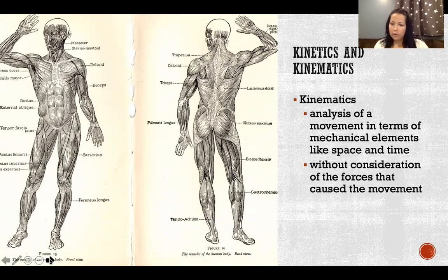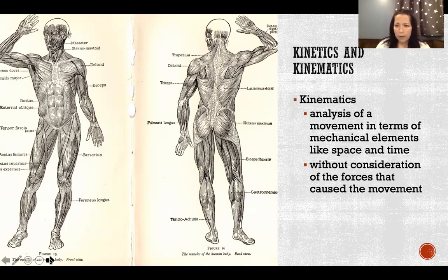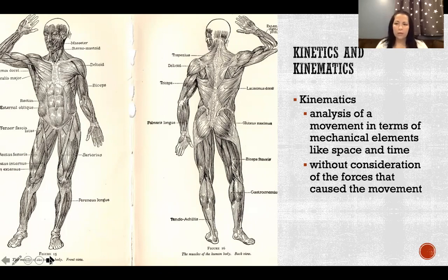Kinematics is without consideration of the forces that cause the movement. So in kinematics, we don't care about how much muscle force we produce to move the limb or how much gravity was working against us. We're not looking at forces. We're simply analyzing the actual movement in space, and maybe a time sequence — like did the elbow flex before or after the shoulder abducted. So time sequence and how we're actually moving.